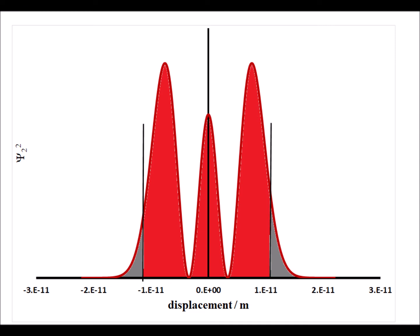Here again, for n equals two, the forbidden regions are shown in gray, and the classically allowed regions are shown highlighted in red.